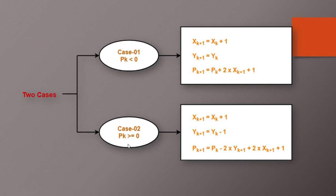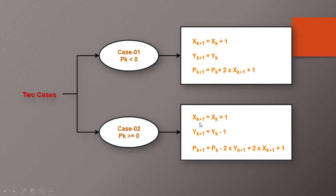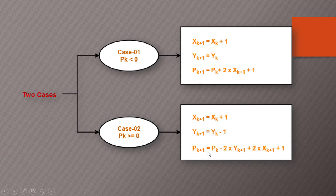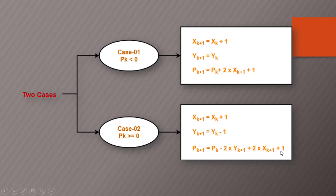And in second case if decision parameter is greater than equal to 0, then we will calculate XK plus 1 is equal to XK plus 1 and YK plus 1 is equal to YK minus 1. And new decision parameter is equal to PK minus 2 into YK plus 1 plus 2 into XK plus 1 plus 1.